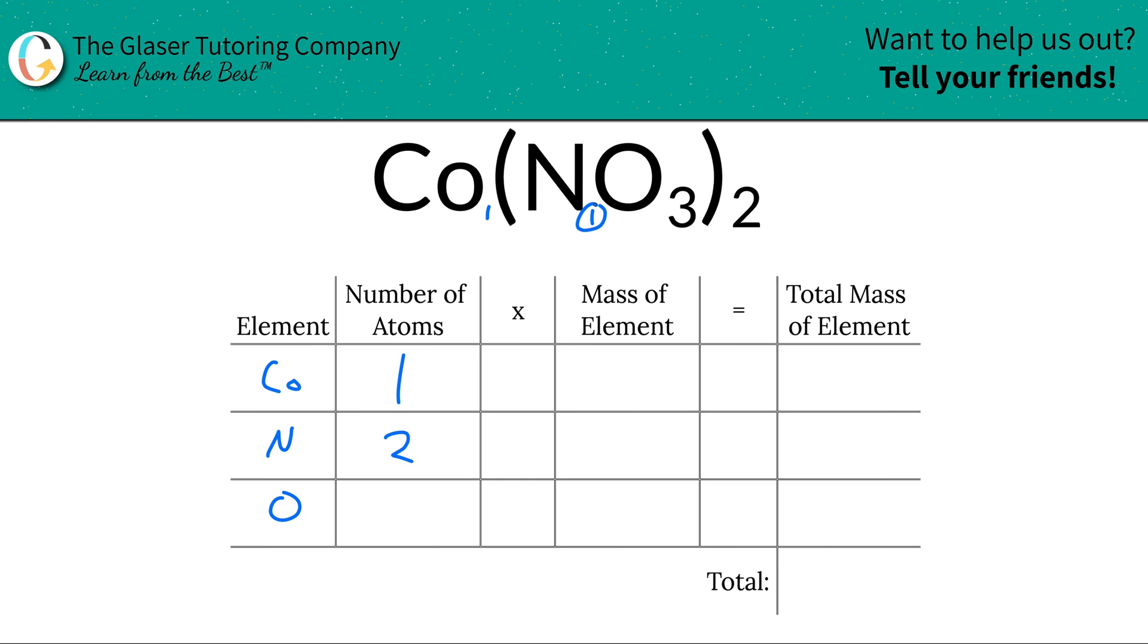In other words, just simply take the subscript here and multiply it by the outer subscript. Same thing for oxygen. You take the subscript of O in there and multiply it by its outer subscript. So you'd have a total of six oxygens.